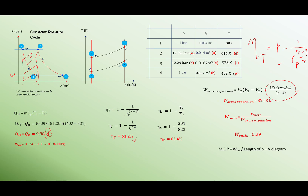Work ratio equals net work divided by gross work expansion. Substituting your net work (heat supply minus heat rejected) and gross work expansion gives a work ratio of 0.29. To find mean effective pressure (MEP), use net work divided by the length of the PV diagram, which is V4 minus V2. V4 is 0.112 and V2 is 0.014, so substituting these gives MEP equals 106.94 kilonewtons per metre squared. That concludes this example.